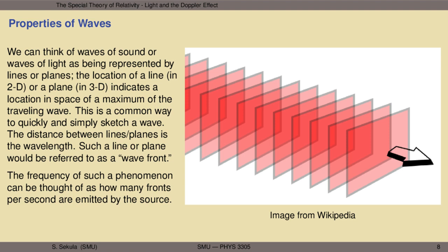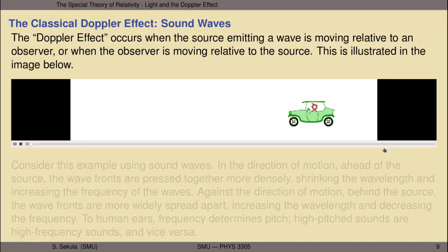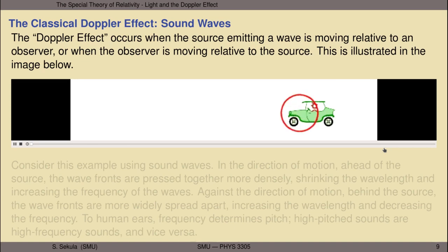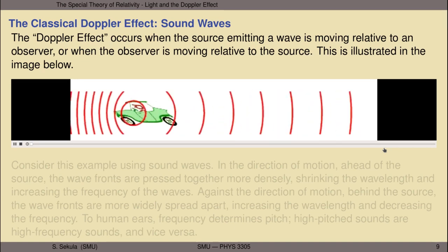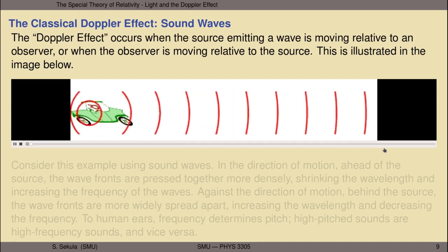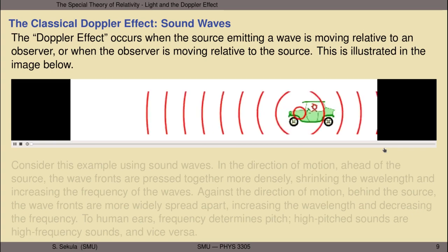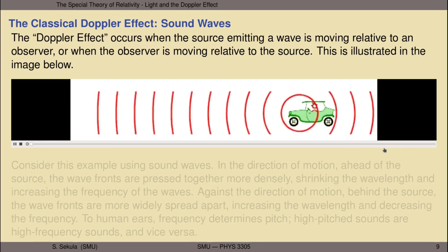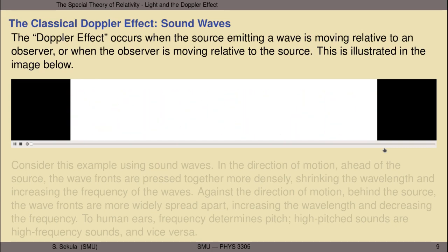The frequency of such a phenomenon can be thought of as how many fronts per second are emitted by the source. The time between planar emissions would be the period of the wave, and one over that would be the frequency. This brings us to the so-called classical Doppler effect. I'm going to use sound waves to motivate this because most of you have probably experienced the Doppler effect with sound waves. The Doppler effect occurs when the source emitting a wave is itself moving relative to an observer — so for a sound wave, we're talking about a listener who can receive the pressure changes in their ears.